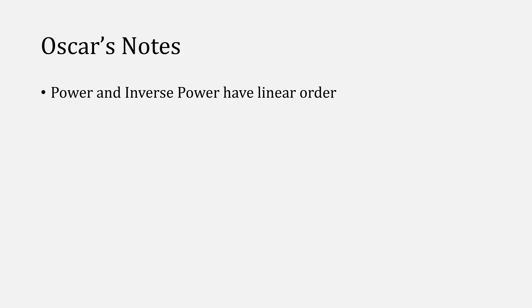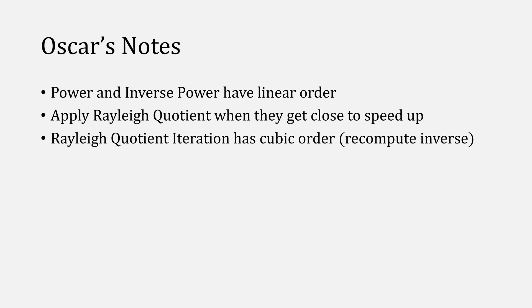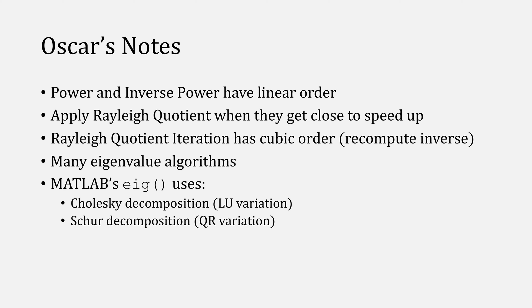Some final thoughts. Both power method and inverse power method have linear orders, but you can speed things up using the Rayleigh quotient. And in fact, Rayleigh quotient iteration actually has a cubic convergence order. There are many other eigenvalue methods out there. These are not the only three, and MATLAB even has two of them built in when you call the eig function.